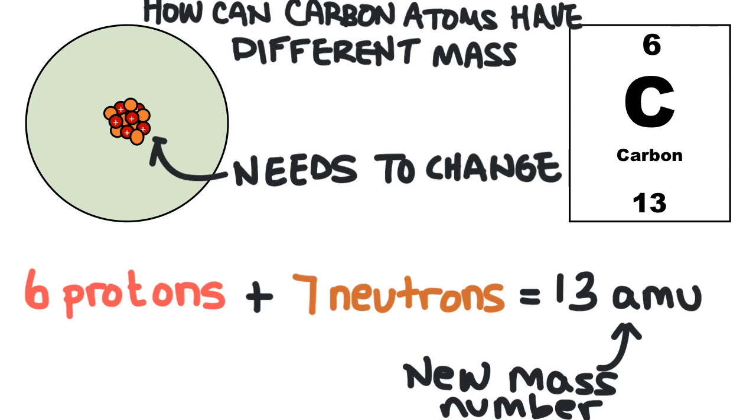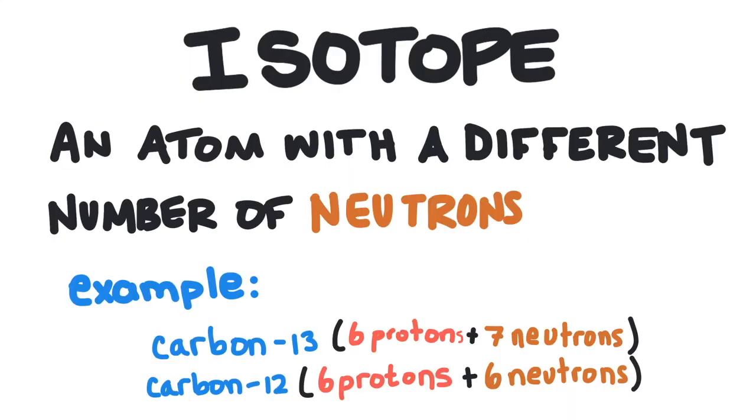Six protons plus seven neutrons gives a mass number of 13. It's called carbon 13, and it's different from carbon 12. Carbon 13 is an isotope of carbon. An isotope is an element that has a different number of neutrons in its nucleus.